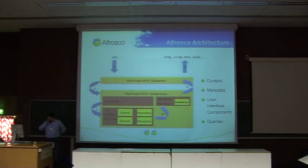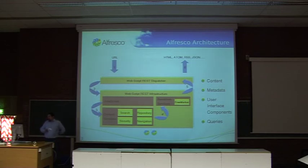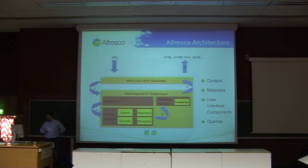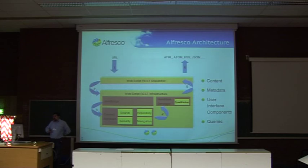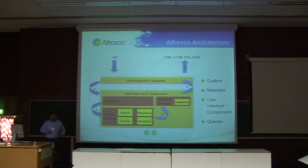This schema explains how a request is handled when using web scripts. The web scripts REST dispatcher analyzes and extracts the parameters from the URL, then the data model is built using JavaScript. That data model is passed to FreeMarker, which renders the answer. You can also use it to build Ajax applications — that's how the dashlet was built. The output format can be different and multiple.